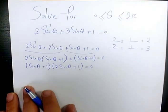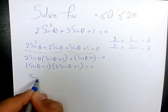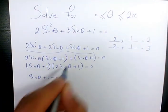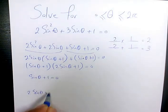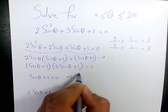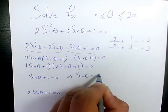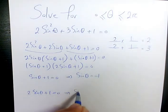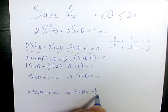Now I have two cases: one when sine theta plus 1 equals 0, and when 2 sine theta plus 1 equals 0. This gives us sine theta equals negative 1, and sine theta equals negative 1 over 2.